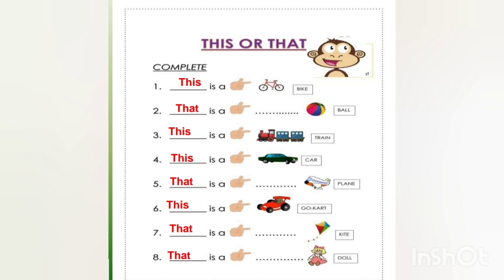That is a kite — the kite is far away. That is a doll — the doll is far away. See you all in my next grammar learning series!